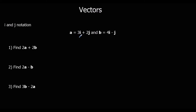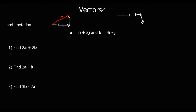So vector a goes along the x by 3 and up the y by 2 — along 3, up 2. Vector b goes along 4 and down 1. So if we've got a negative j, that means we're going in the negative y direction. If we had a negative i, that would be in the negative x direction. So a is along 3, up 2; b is along 4, down 1.